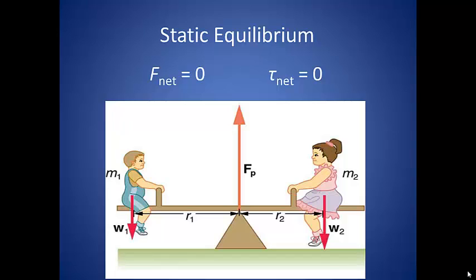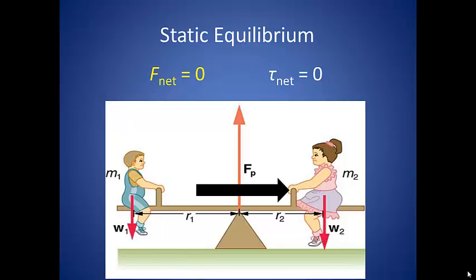If we look a little closer at our teeter-totter, we can get a better idea of the forces acting on the board. There is a force upward on the pivot point. The boy on the left has a certain mass, and that is being pulled down by gravity, while the girl on the right has a certain mass that is also being pulled down by gravity. The key idea here is that all of these forces add up to zero.